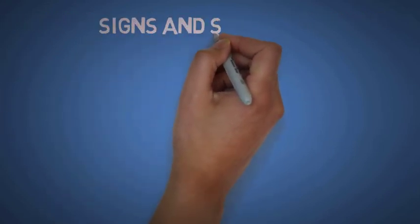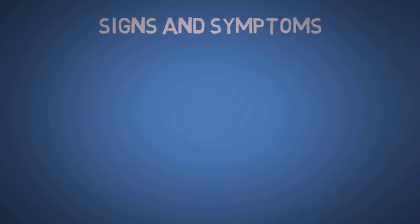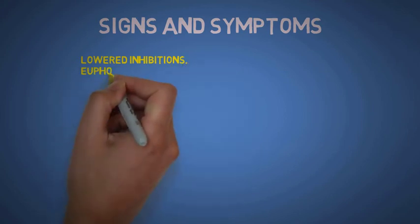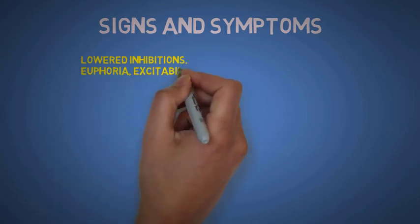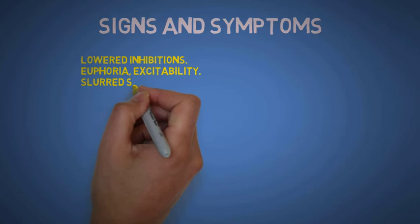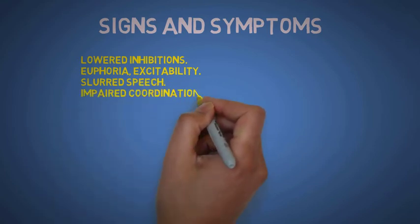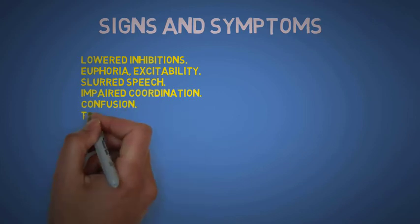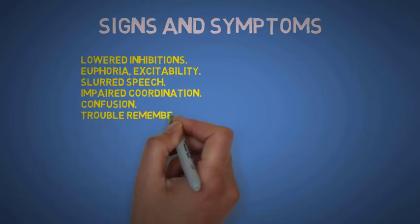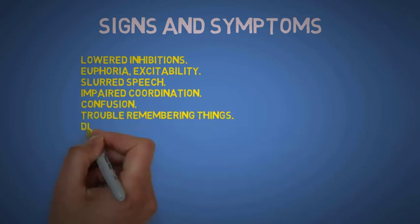So what are the signs and symptoms of excessive alcohol intake? It causes lowered inhibitions to start with and you start feeling euphoric and excitable. Slurring of speech happens next, then you have impaired coordination. Confusion sets in, and then you can have trouble remembering the things that you have done.